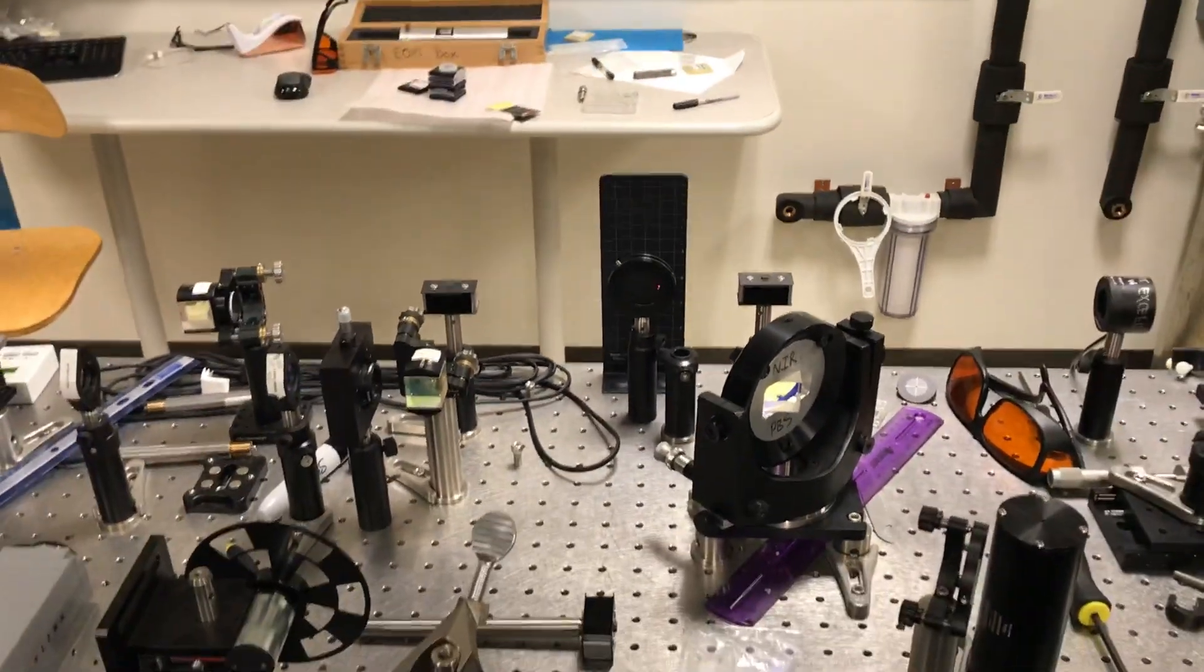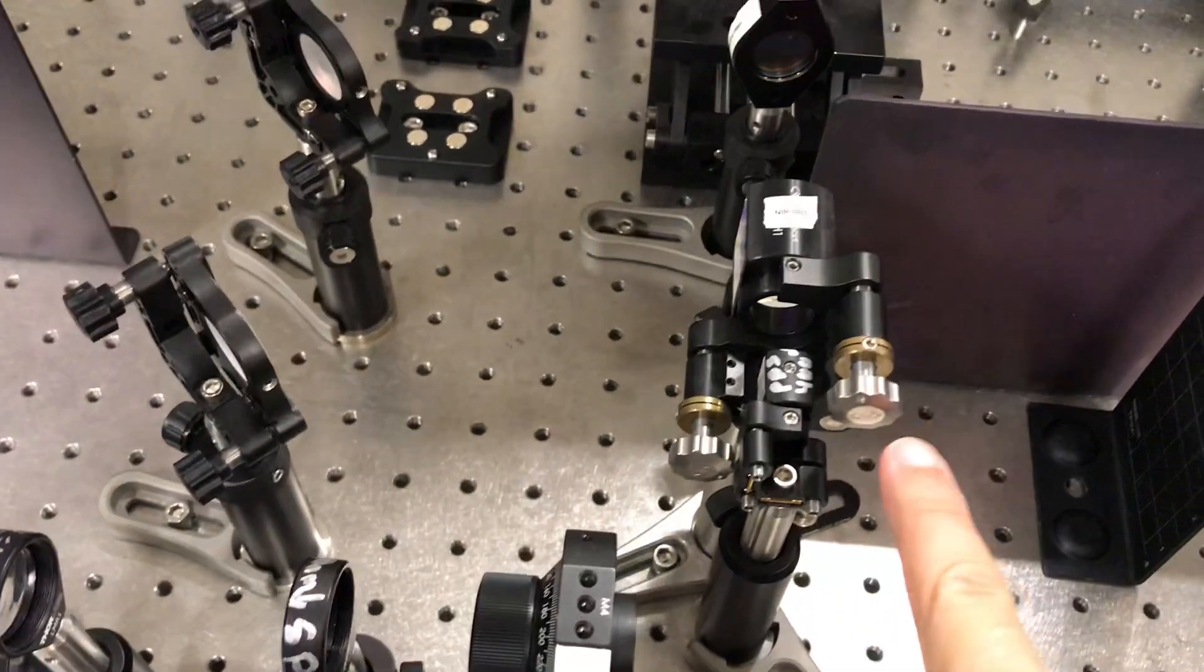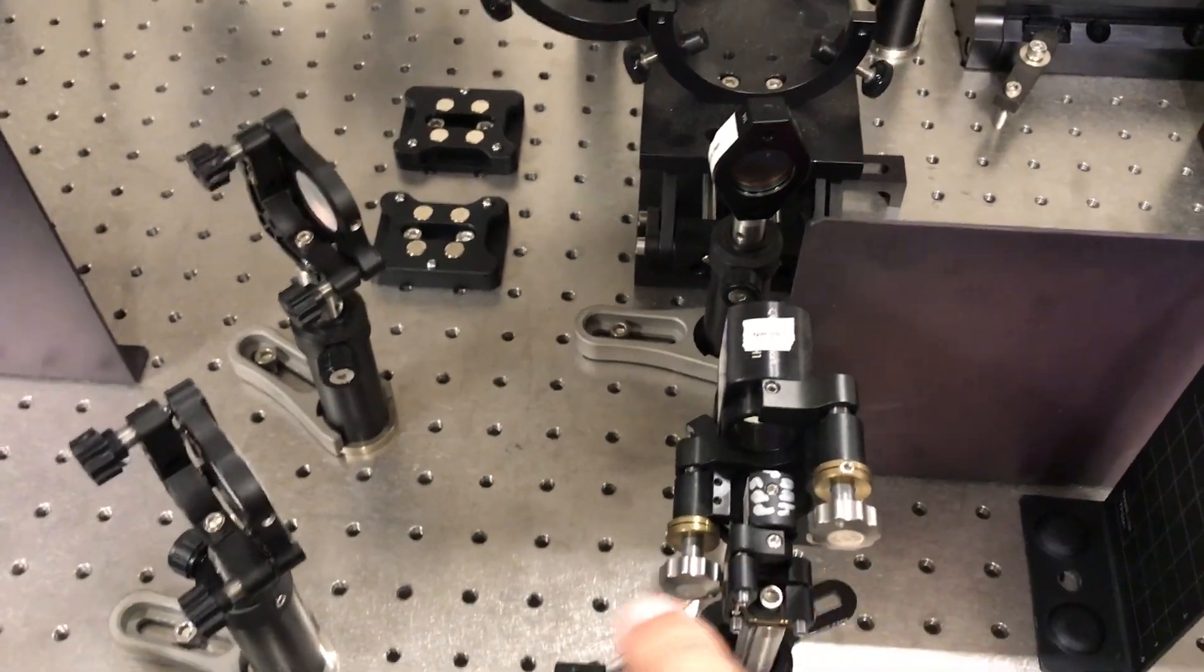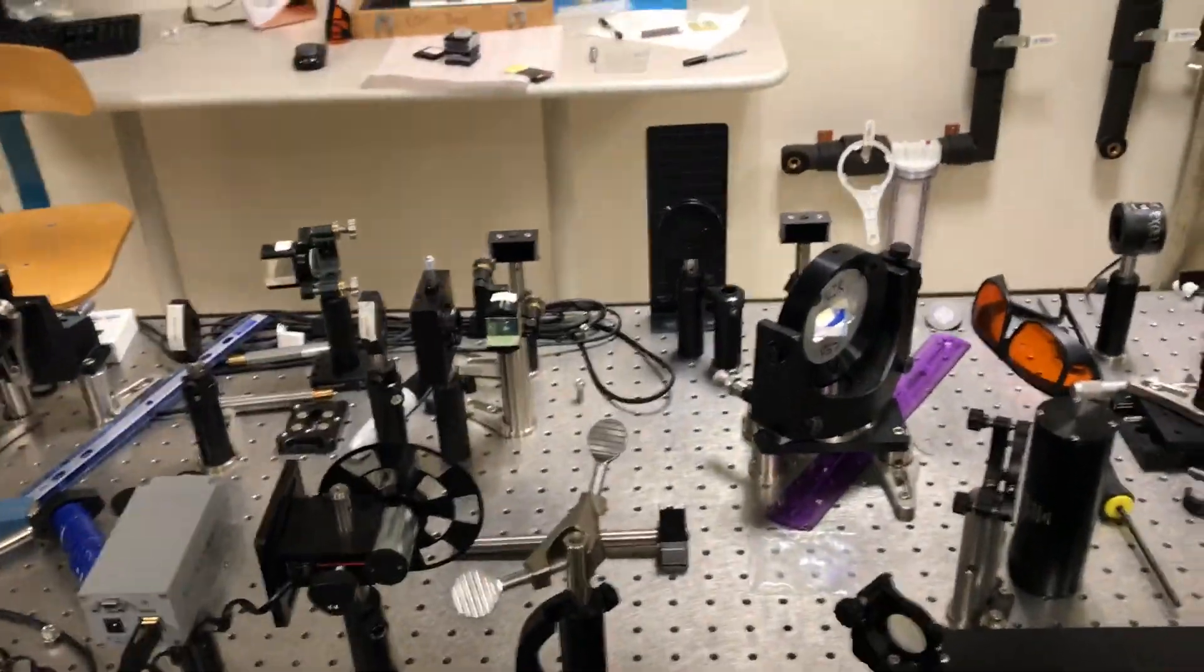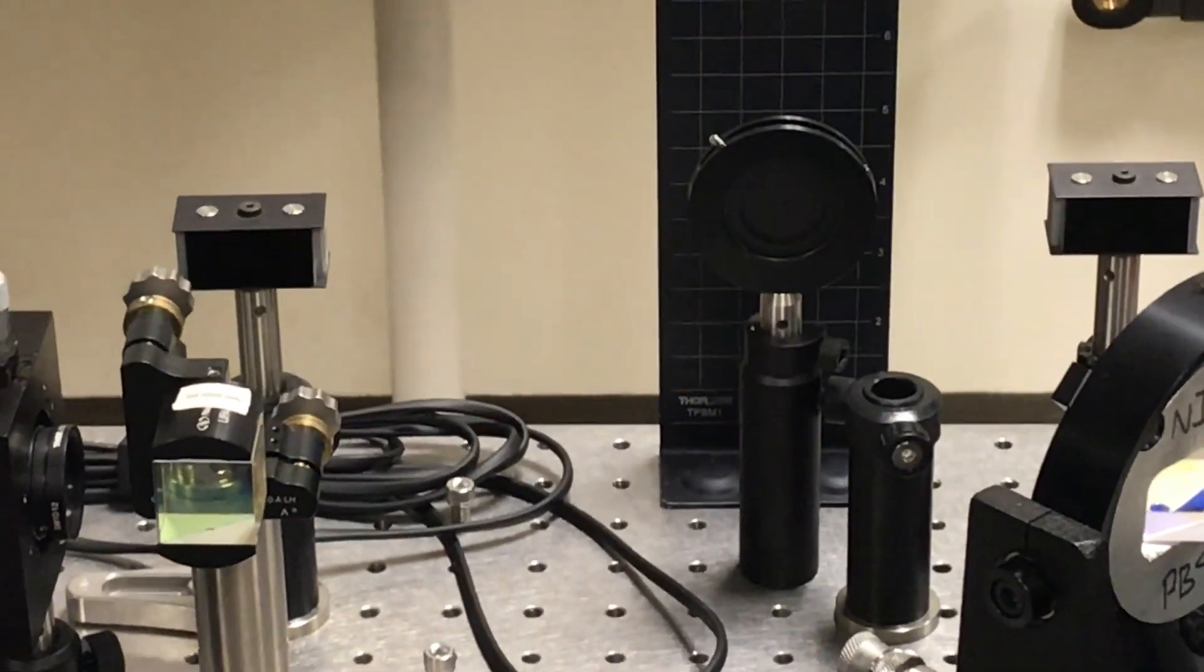So all I'm going to do is basically manipulate the pointers on my polarizing beam splitter until everything goes through that aperture. So let me just do that right now.